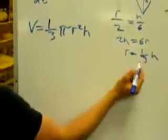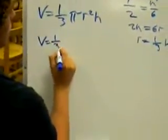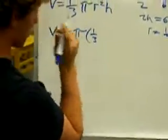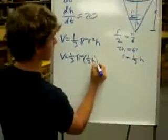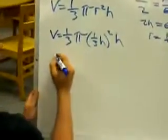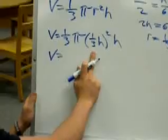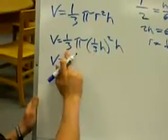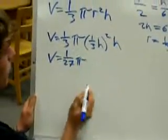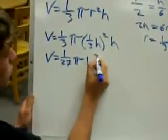We can now substitute this in for r. So we have our volume equals one-third pi times one-third h squared times h. So the volume is equal to one-third squared is one-ninth, one-ninth times one-third is one-twenty-seventh pi. We have h squared times h gets us h cubed.